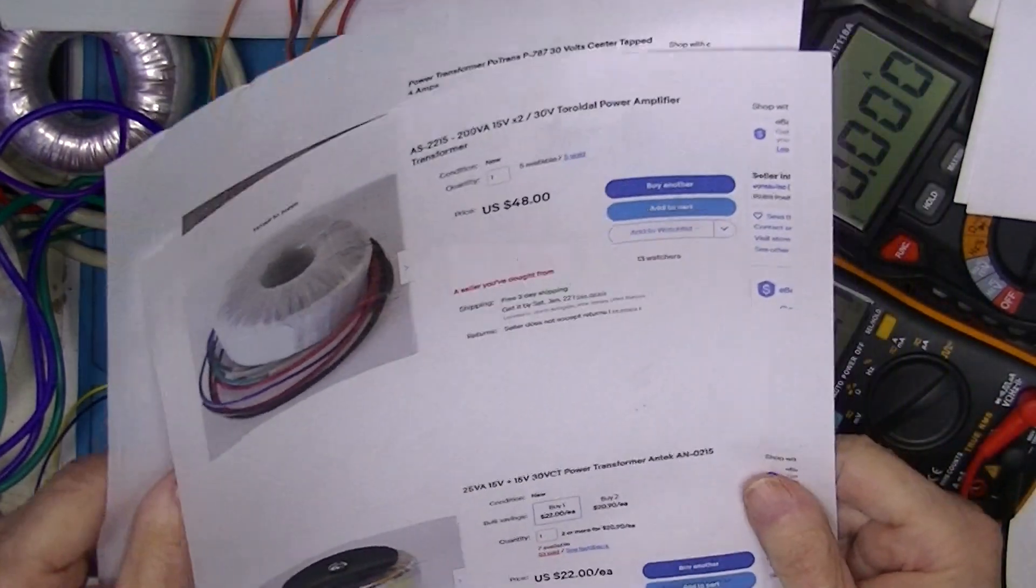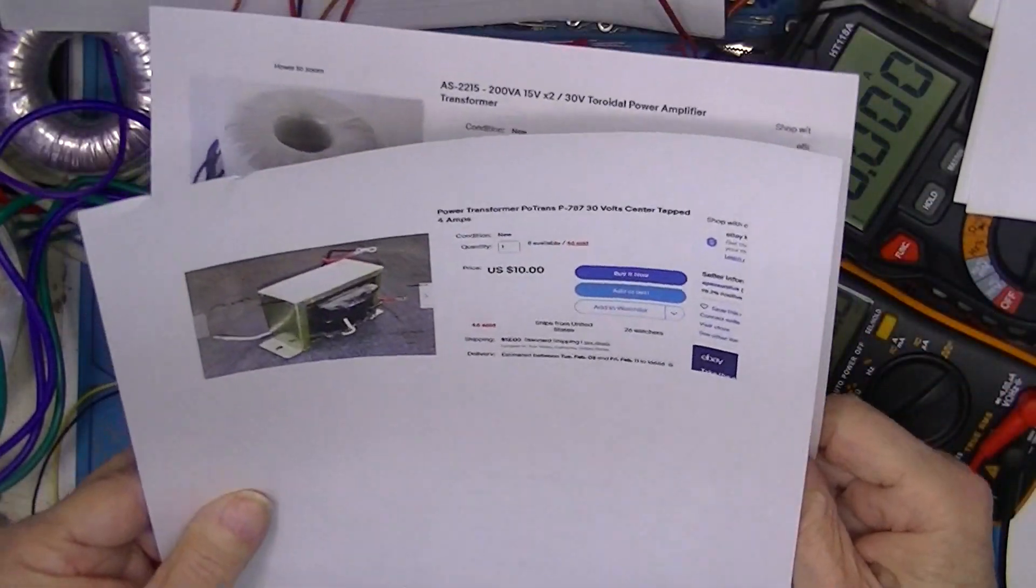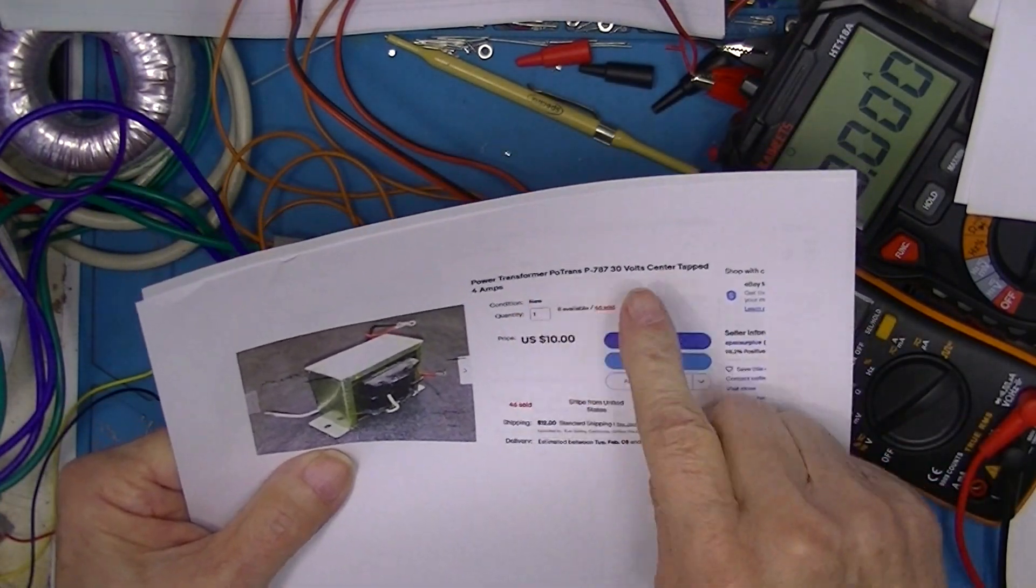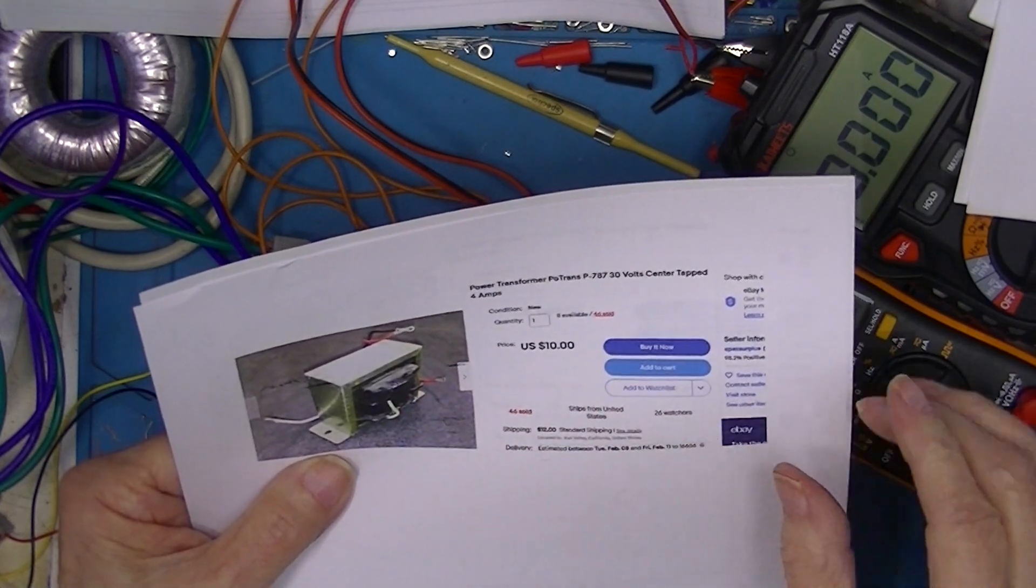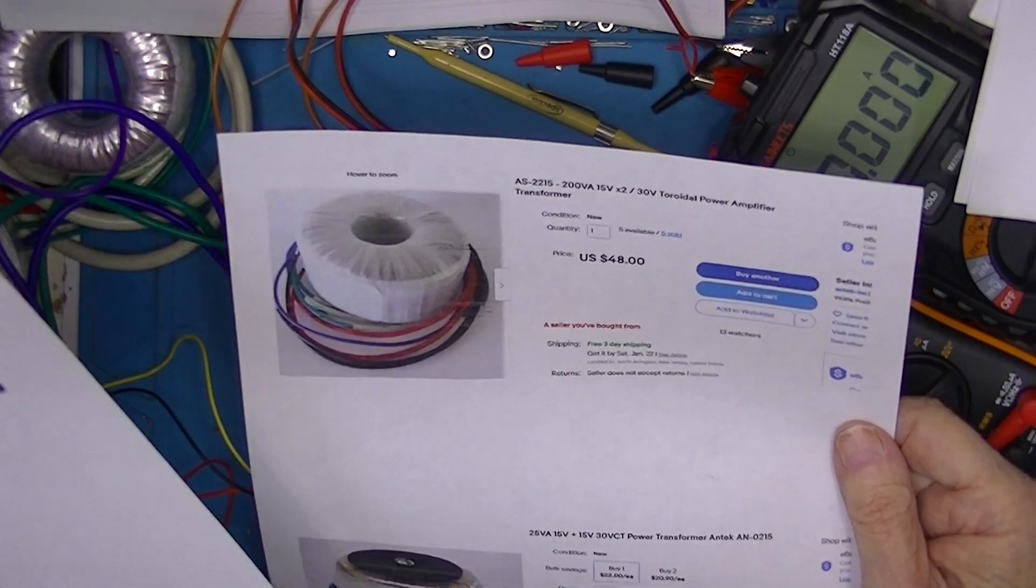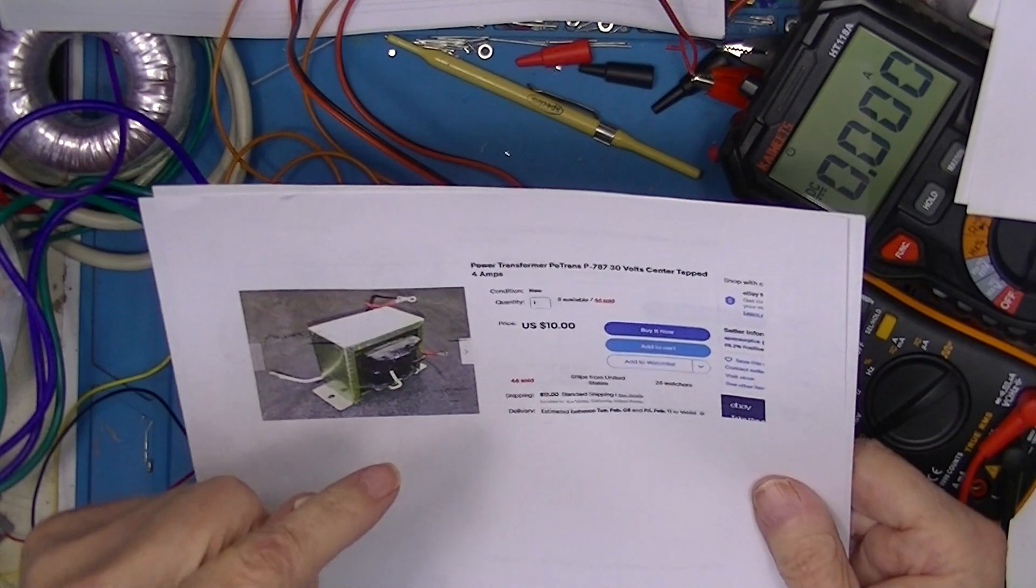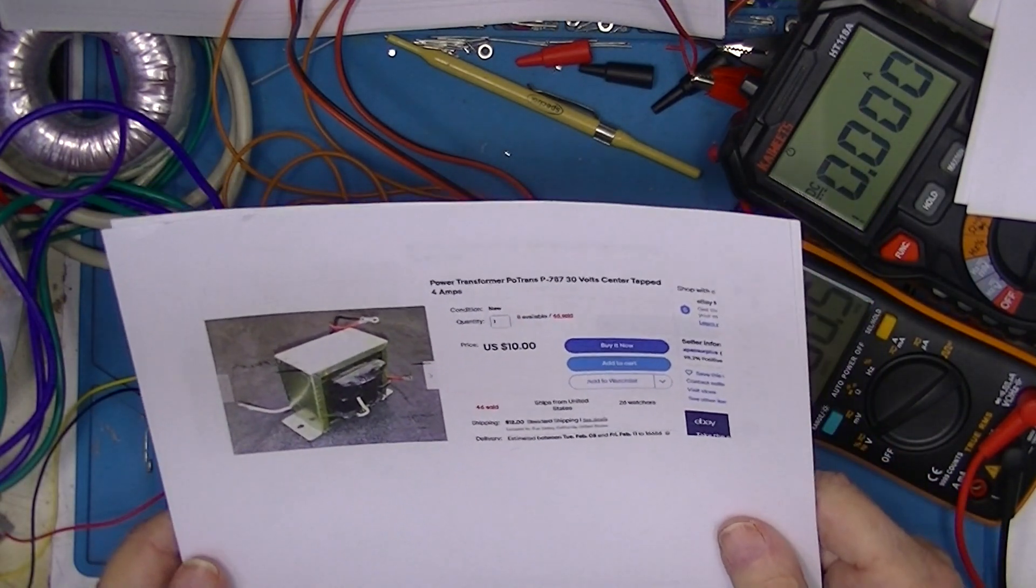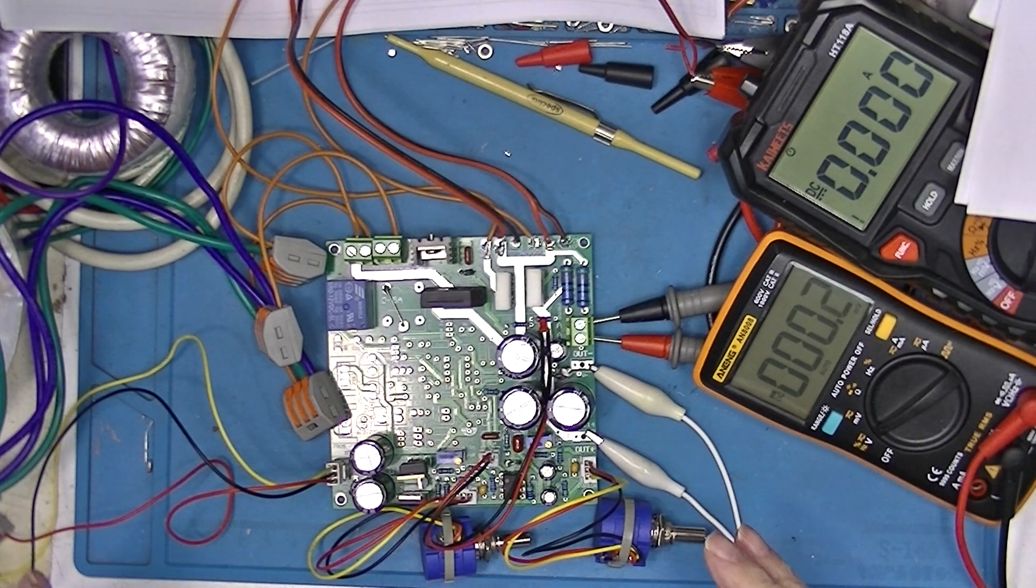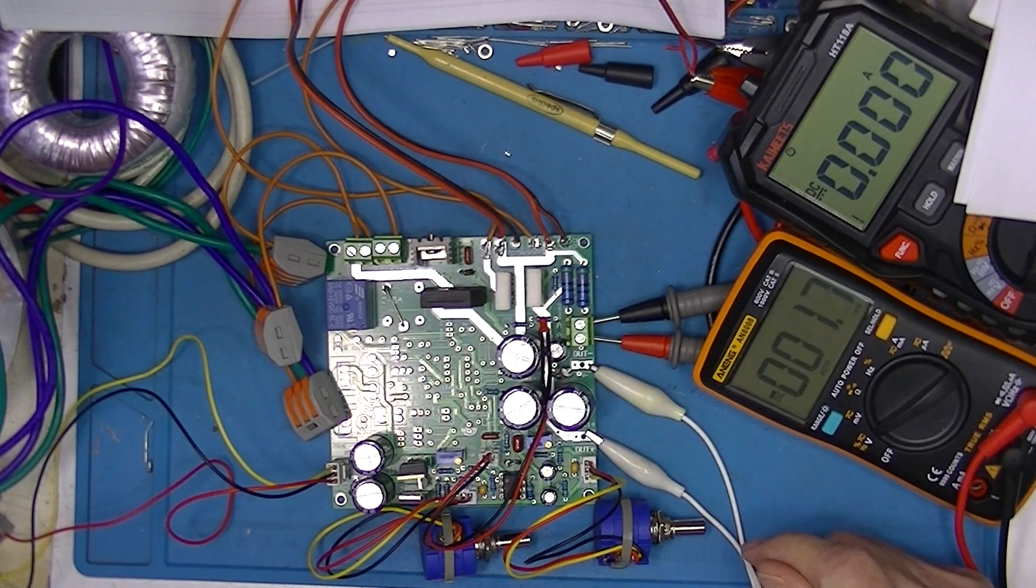Looking around last night on eBay, this transformer here, I found this. It's a 30 volt center tap transformer rated 4 amps. Now you would have to sacrifice an amp, but you could have this transformer for $22. I need to get a battery for my temperature device. I need to put a heat sink on this rectifier, that's ridiculous.